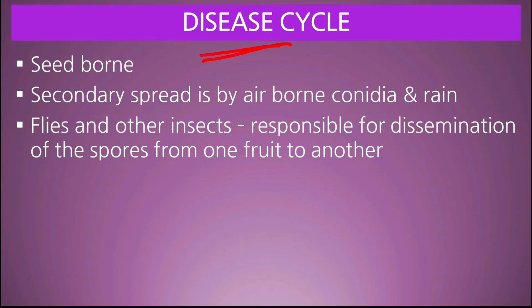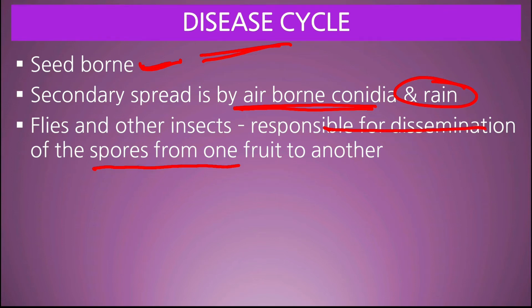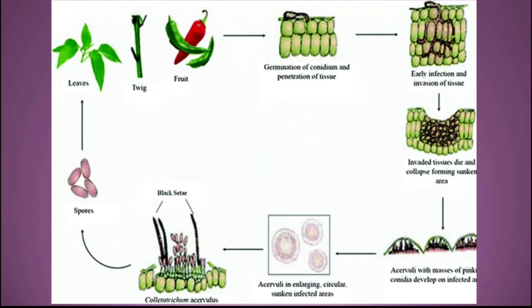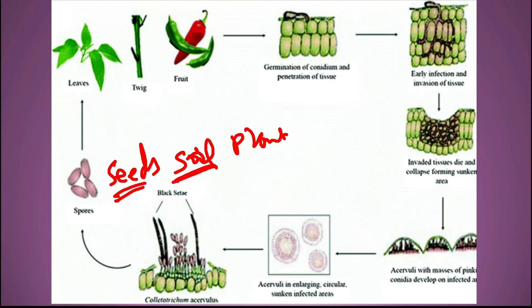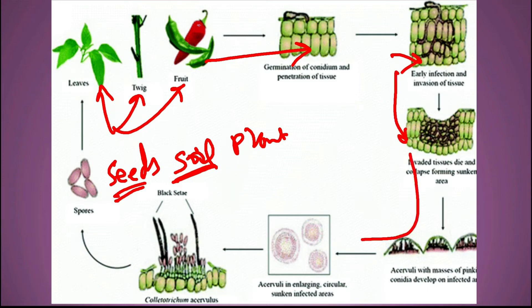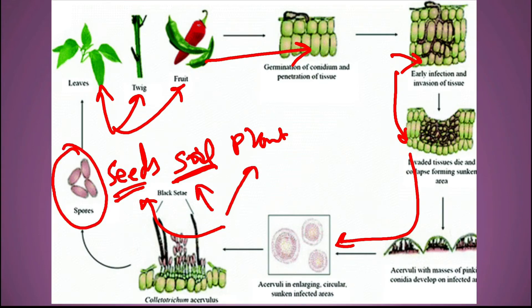Disease cycle: The disease is seed-borne — pathogen seed द्वारा एक जगह से दूसरी जगह transmit होते हैं। Secondary spread is by airborne conidia and rain. Insects and flies are also responsible for dissemination of spores from one fruit to another. Pathogen seeds में और soil में plant debris में survive करता रहता है। अगले season में leaf, twig, या fruit में infection करता है — acervuli बनते हैं, conidia air/rain द्वारा फैलते हैं।